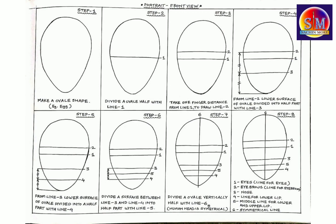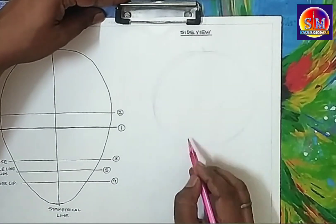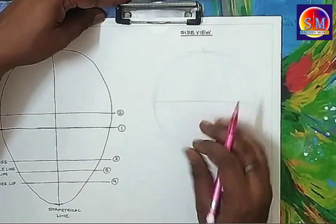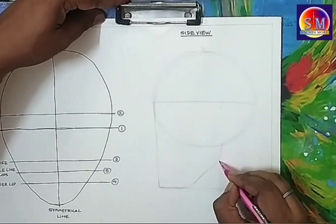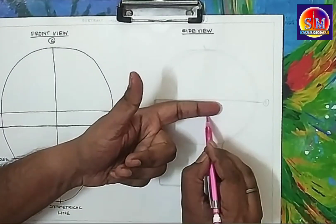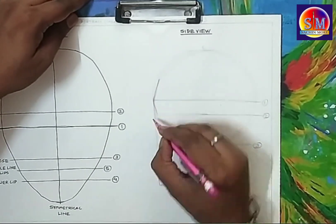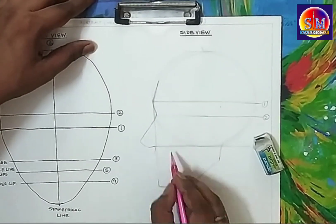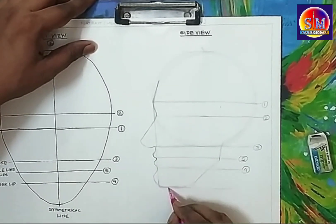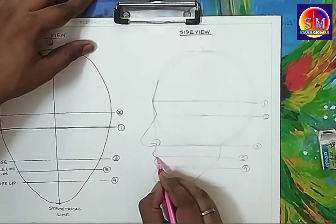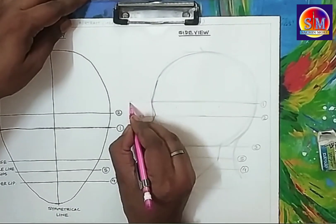This is the full procedure for dividing front view proportions step by step. Next is the side view. For that we draw one circle and divide it in half, then take a semicircle distance below the circle and draw one line with a perpendicular — this is the basic shape for the side view head. Then take one finger distance below line one — this is line two. The lower part from line one divided in half is line three, where we show the shape of the nose. The lower part of line three divided in half is line four, and between line three and four divided in half is line five — for the middle line of the lips and the lower lips.